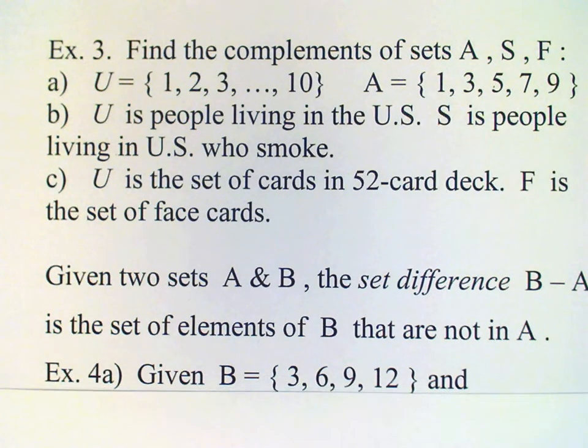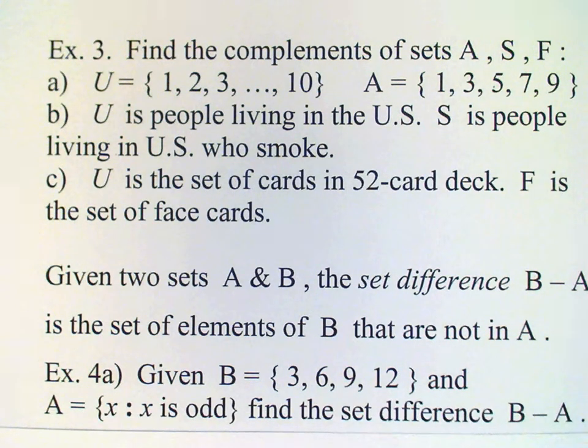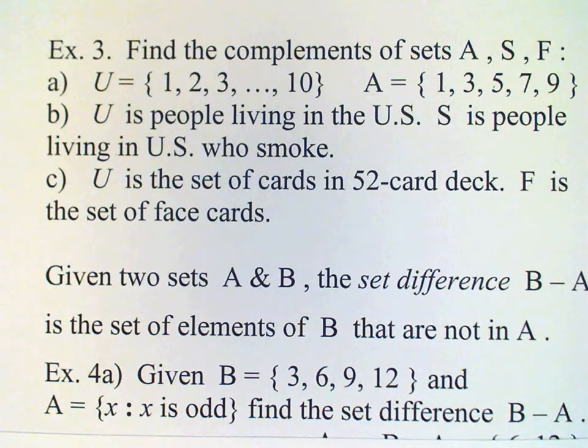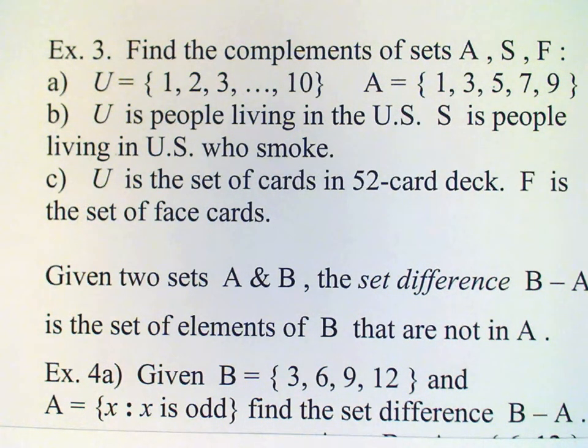So for example, we have B is the set of elements 3, 6, 9, 12, and A is the set of odd numbers. And we want to find the set difference.